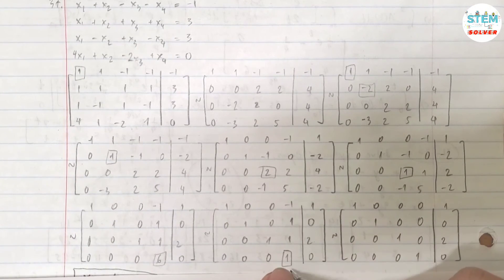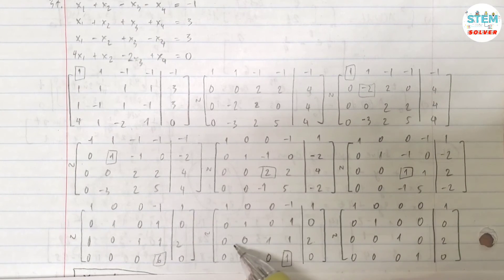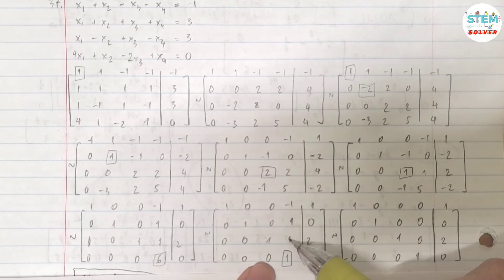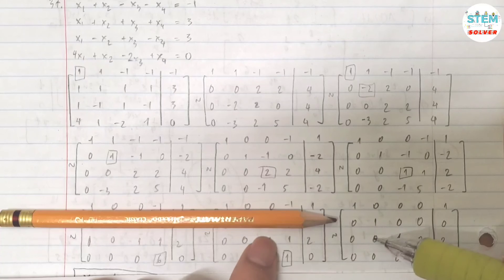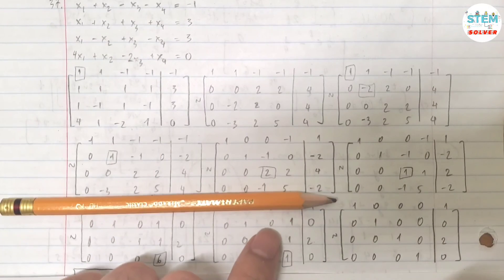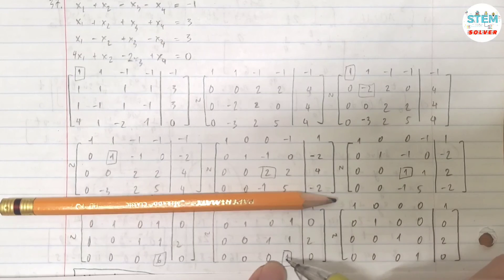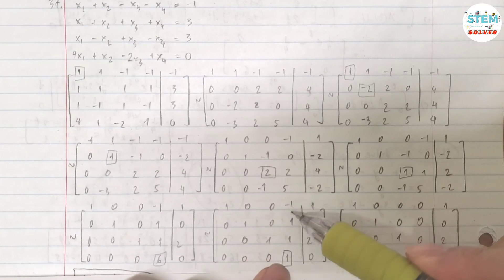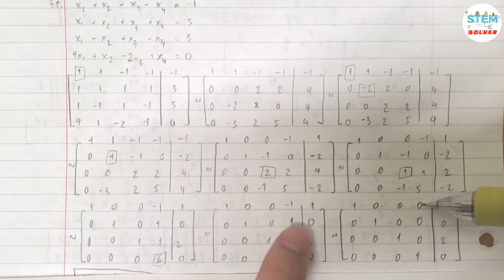Now I need to zero out the entries above this pivot. For the third row: multiply the fourth row by negative 1 and add it onto the third row, giving 0, 0, 1, −1+1=0, 0. For the second row: multiply the fourth row by negative 1 and add it onto the second row — all entries to the left of the pivot stay the same, and −1+1=0. For the first row: add the fourth row to the first row, giving 0+1=1, 0, 0, 0, −1+1=0; so the right-hand side becomes 0+1=1.